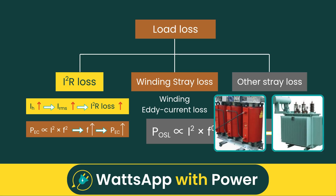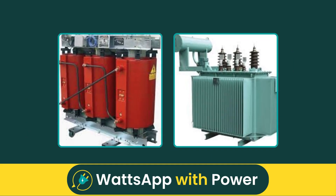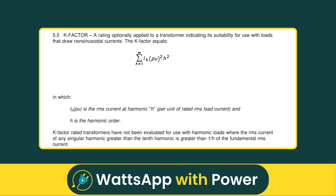So, how do K-factor rated transformers address this increased loss and heat problem? The key lies in designing transformers that can withstand the additional thermal stress caused by harmonic currents, and that's exactly what the K-factor helps determine. The K-factor is an index that indicates a transformer's ability to handle harmonic currents without exceeding its specified temperature rise. Defined in UL 1561, the K-factor is calculated using a formula that considers the per-unit current at each harmonic and the harmonic order. In simple terms, it quantifies how much additional heating a transformer will experience under harmonic loads, and whether it's built to safely withstand it.